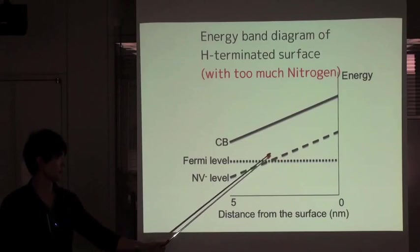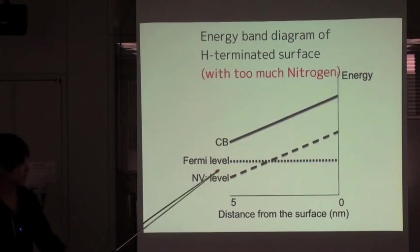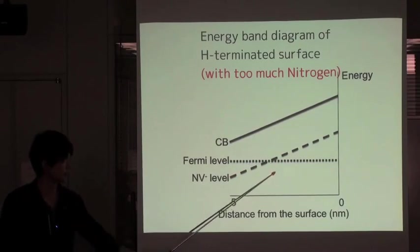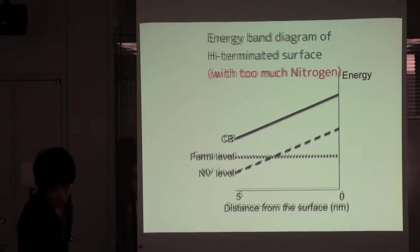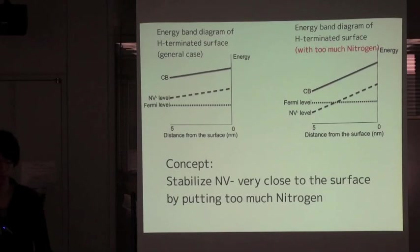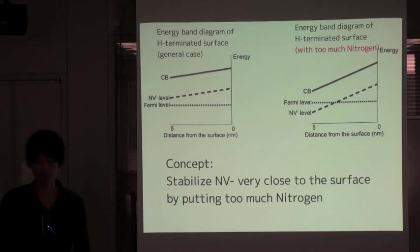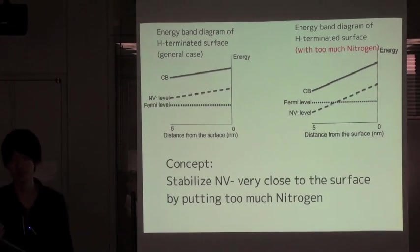As a result, the Fermi level goes up other than Fermi level. NV minus center can be created in this surface region. Our sample growth concept is to stabilize NV minus very close to the surface by putting too much nitrogen.